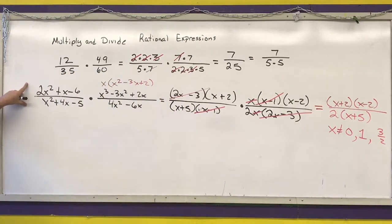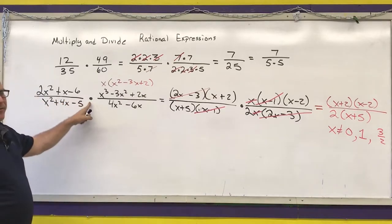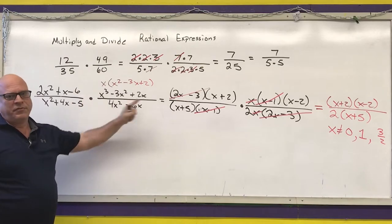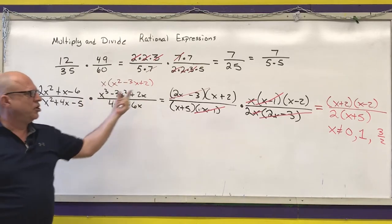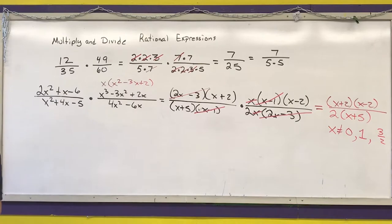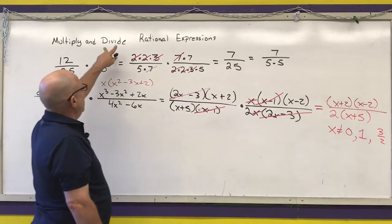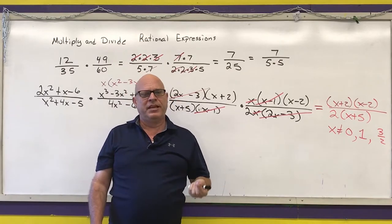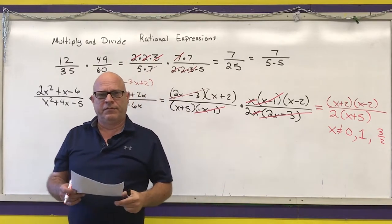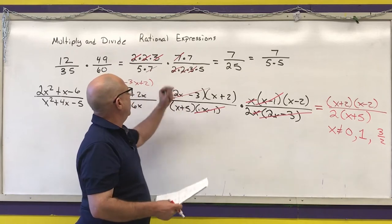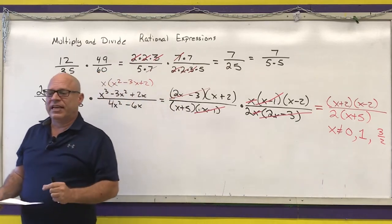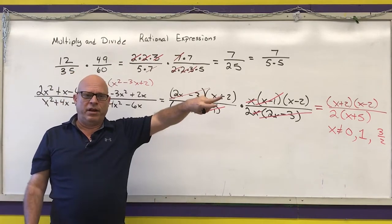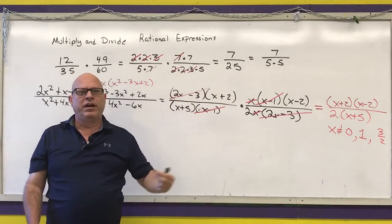These are just like the simplification problems, except you're going to have to factor up to four different polynomials before you do the simplification. A reminder: division of fractions is the same as multiplying by the reciprocal of the second fraction, and we're going to do the exact same thing with rational expressions — take the second one, reciprocate it, and then multiply.